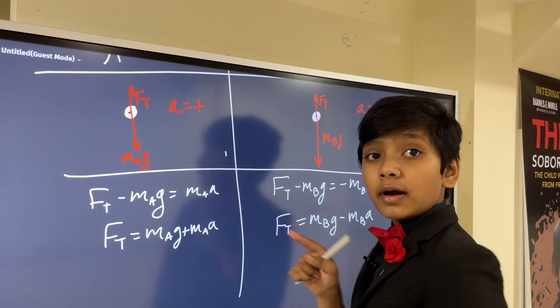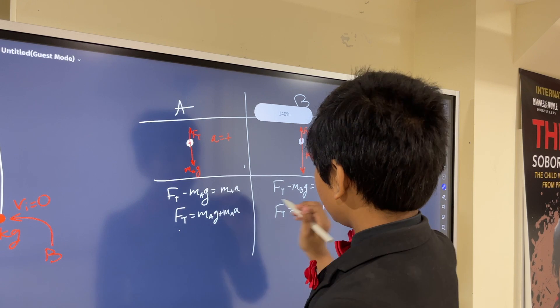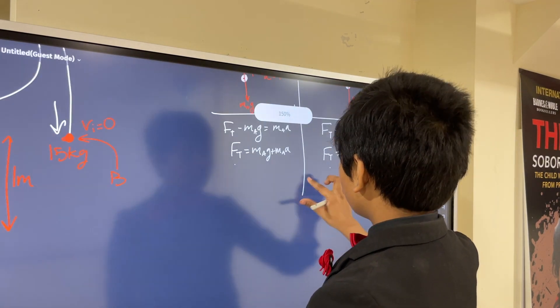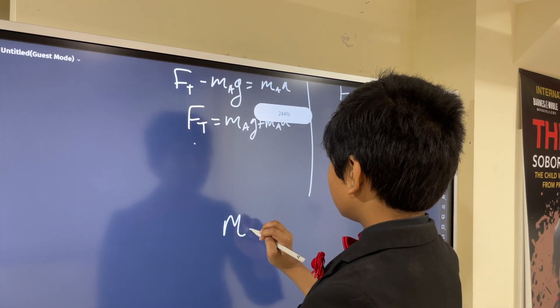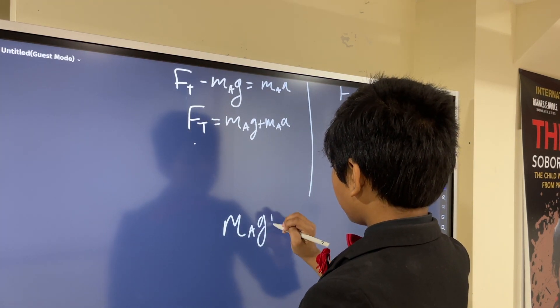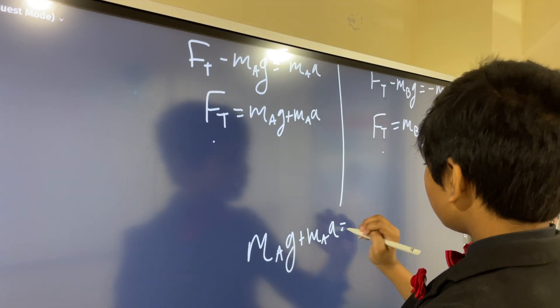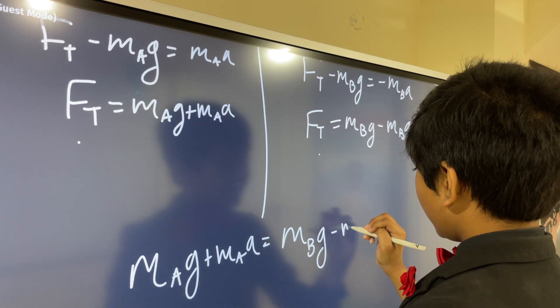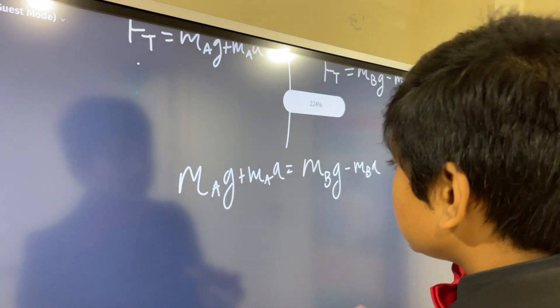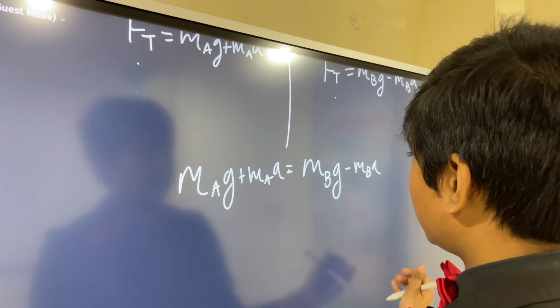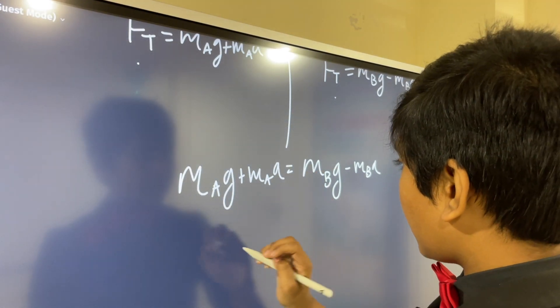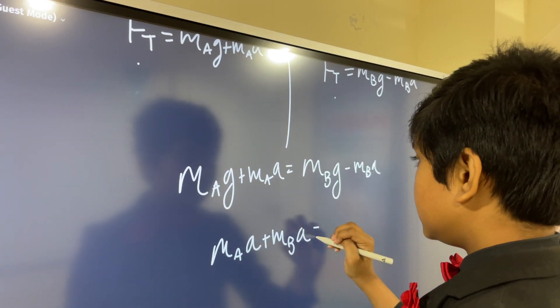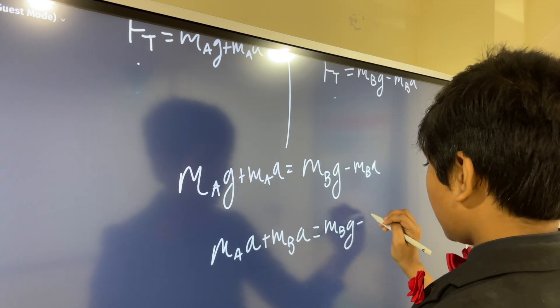Now, we're going to equate these two, because this FT has to be the same. I mean, it's the same rope pulling on both of them, so we get MAG plus MAA is equal to MBG minus MBA. So, now, we can just solve for A. It's pretty simple here.